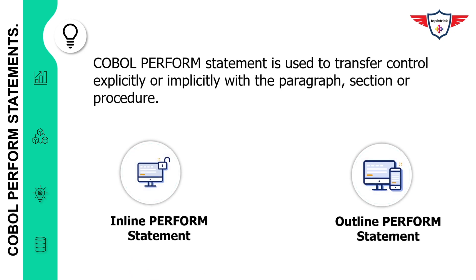Now let's look at the definition of the COBOL PERFORM statement and its different categories. In layman's terms, the COBOL PERFORM statement is used to transfer control explicitly or implicitly within a paragraph, section, or procedure. The PERFORM statement in COBOL is divided into two categories. The first is the inline perform statement and the second is the outline perform statement. The major difference is that the inline perform statement executes the piece of logic between the PERFORM and END-PERFORM keywords.